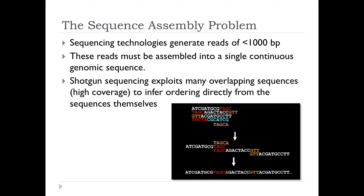With this shotgun sequencing approach we get many overlapping sequences — high coverage — to infer the order directly from the sequences themselves. You can see how you start off with a bunch of sequences, find the overlaps, and thread them together to make a contiguous sequence. If you don't do enough sequencing, some parts of your genome will by bad luck fall out of your library and not be represented. That's why we have to go to a certain depth of coverage. Typically for a bacterial genome you'll be looking at 40–50 fold coverage; in metagenomes it's much less well-defined.